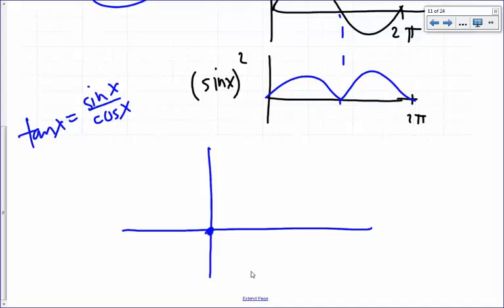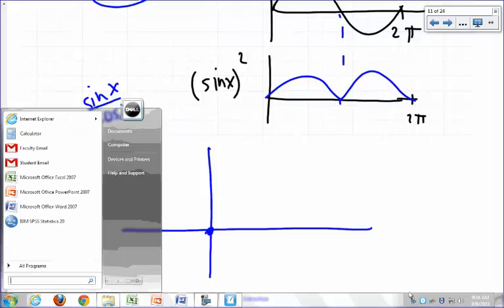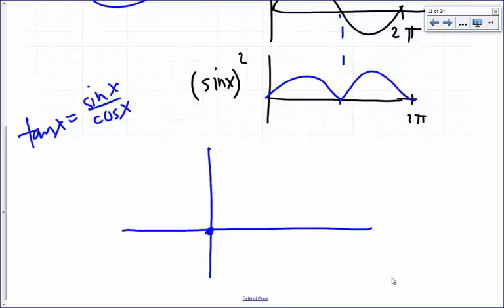From 0 to 2π, what does it look like? When x is 0, sine is 0, so tangent x is 0. What happens as you go to π over 2 at 90 degrees? What happens to your tangent function?